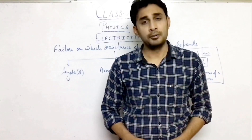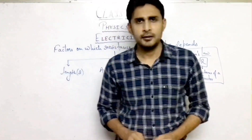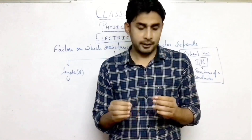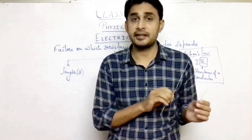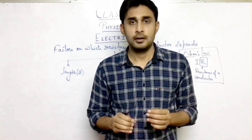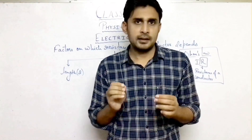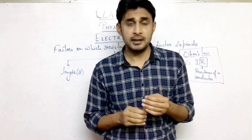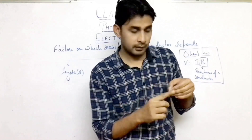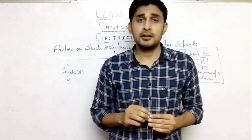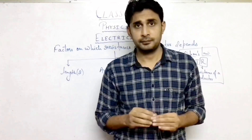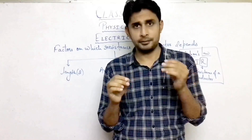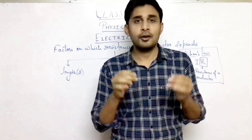To understand how the resistance of a conductor depends on length, we will take two wires. These two wires are made up of copper, which we use in electrical transmission lines. So the material of these two wires is the same, and their area of cross section is also the same, which means they have the same thickness. But the length of these two wires is different — one wire is longer compared to the other. So the resistance of these two wires will be different.